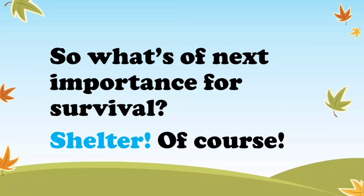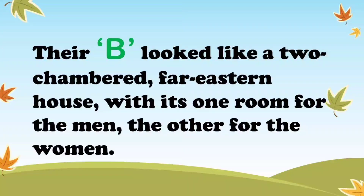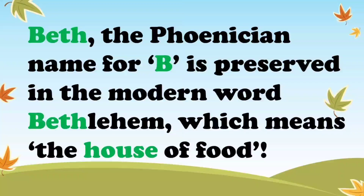What's of next importance for survival? Shelter, of course. And the letter B in Phoenician was called Beth, and Beth meant a tent or a house. And that's why, as we see here, the B looked like a two-chambered, far-eastern house, with its one room for the men and the other for the women. In the same way, Beth, the Phoenician name for B, is preserved in the modern word Bethlehem, which means the house of food.